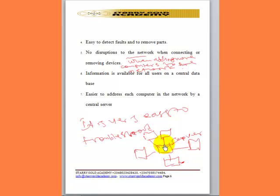For example, if you go to a CyberCafe to browse and they want to disconnect one computer from the network, we have experienced situations where the person in charge makes everybody log out simply because of adding or removing one computer. But in a star topology, that is not necessary, because each computer has direct access to the server.